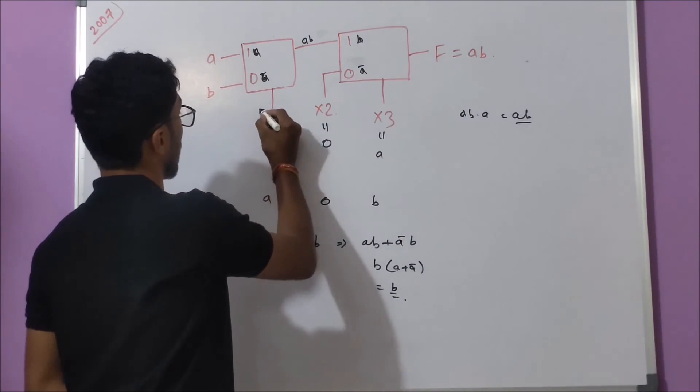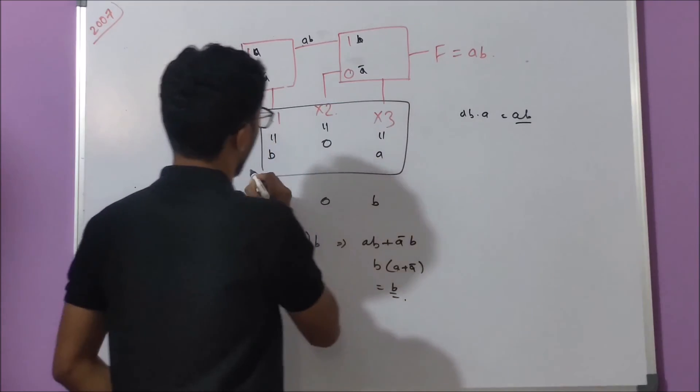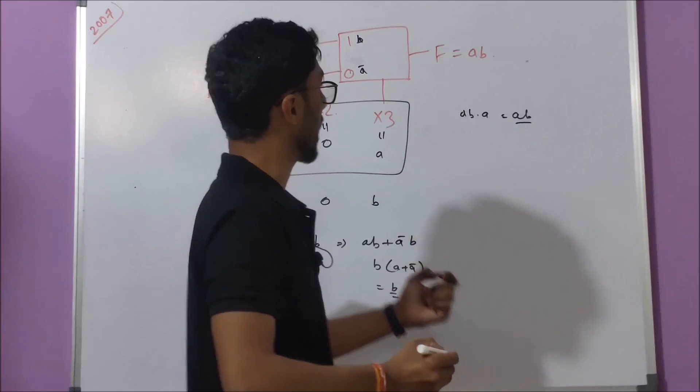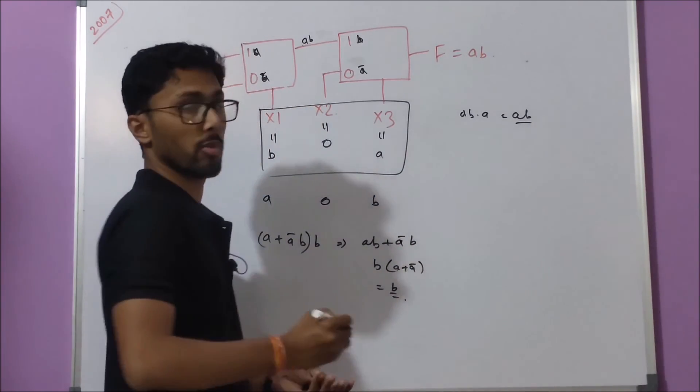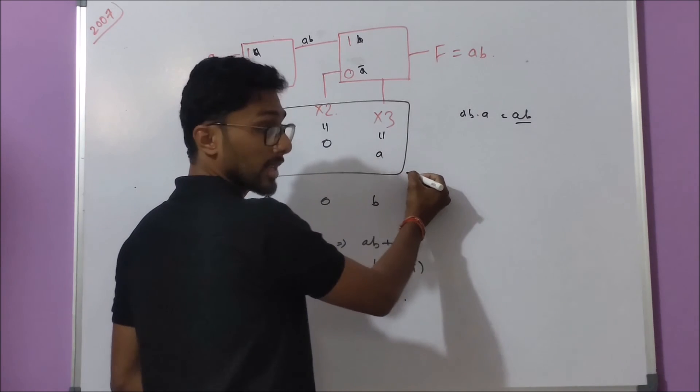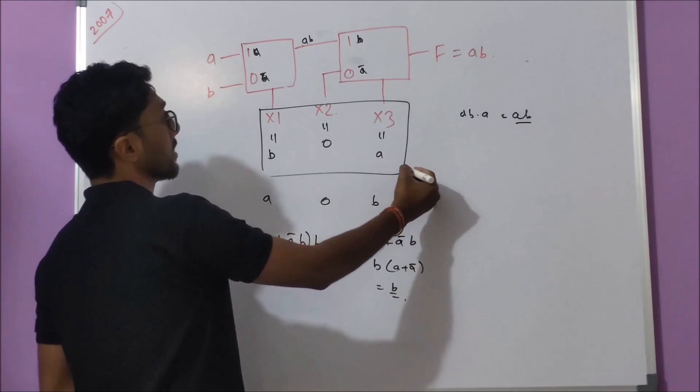So the correct combination is X1's value should be B, X2 should be 0, X3 should be A. So finally, this multiplexer will perform like a 2-input AND gate. So the correct answer is X1 is B, X2 is 0, X3 is A.